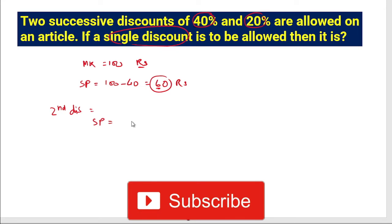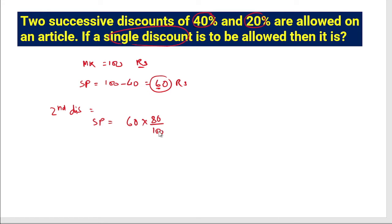So we calculate 60 multiplied by 80 divided by 100. Cancelling zeros, we get 6 times 8 equals 48. The final selling price is 48 rupees.